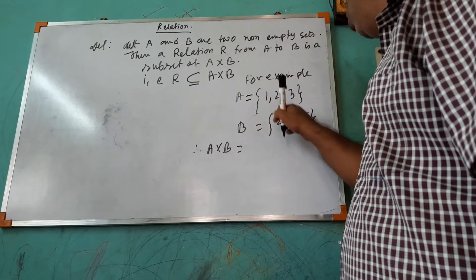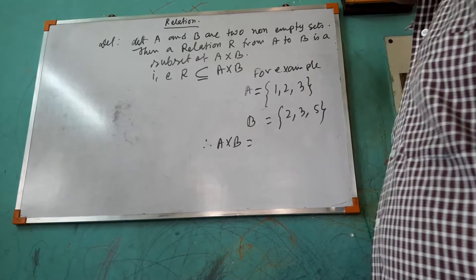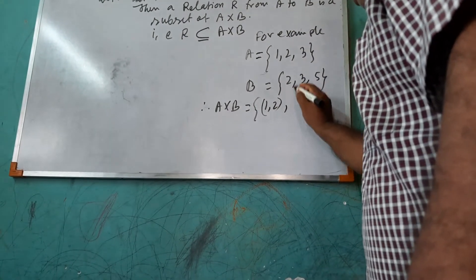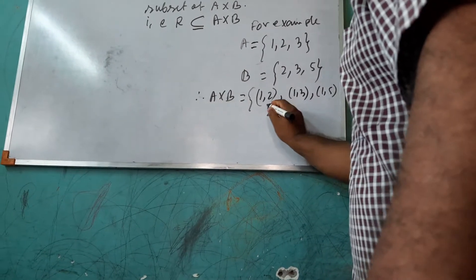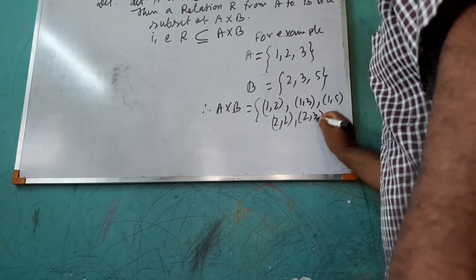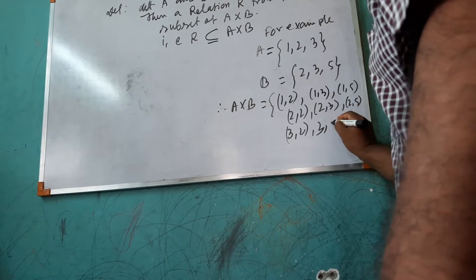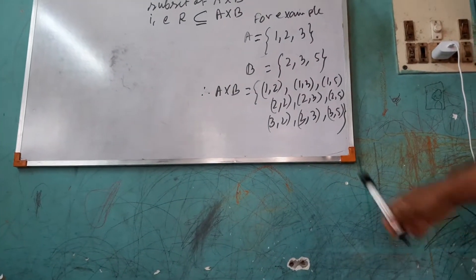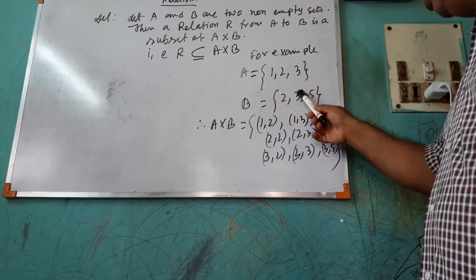A cross B means: (1,2), (1,3), (1,5), (2,2), (2,3), (2,5), (3,2), (3,3), (3,5). This is the Cartesian product of A cross B.